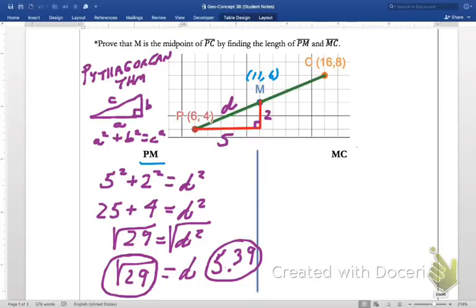So that's the length of PM. Now let's go ahead and find the length of MC. So once again I'm going to make a triangle. And as I make this triangle, over here on the other side, let me do it this way. There's my first segment, and there's my second segment. So I've made another right triangle here.